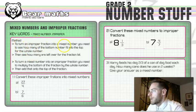So to turn an improper fraction into a mixed number, you need to see how many of the bottom number fit into the top number. That gives you the whole number bit. Then you see how many are left over for the fraction bit and then it's all out of whatever the fraction was out of.